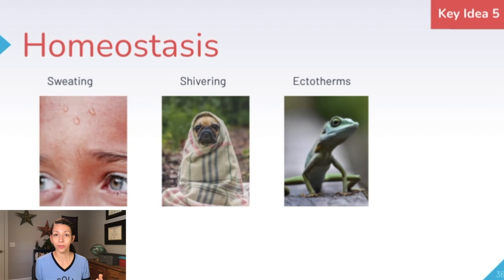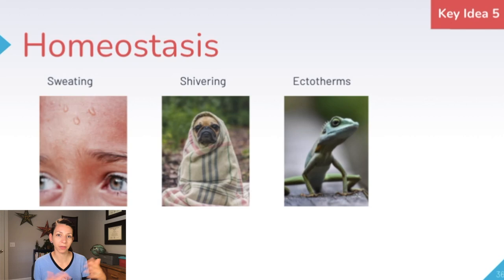In a multicellular organism, we might have different mechanisms of homeostasis that we need energy to perform — for example, changes in our heart rate or respiratory rate, sweating to maintain our body temperature, or releasing insulin to change our blood sugar levels. Even plants maintain homeostasis by regulating water loss and opening and closing their stomata in their leaves.